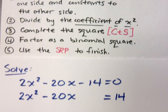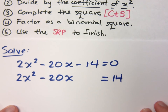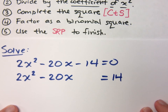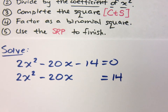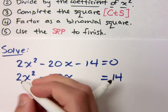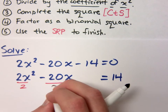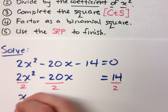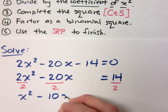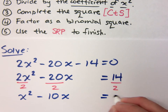Can I divide by 2? Step 2 says divide by the coefficient of x squared. The coefficient of x squared is 2. So before I can do the whole divide by 2 and square it, I have to make sure I have just an x squared. Otherwise, I'm going to end up adding 100 to both sides and totally getting the wrong answer. So if I divide each term by 2, x squared minus 10x equals 7.